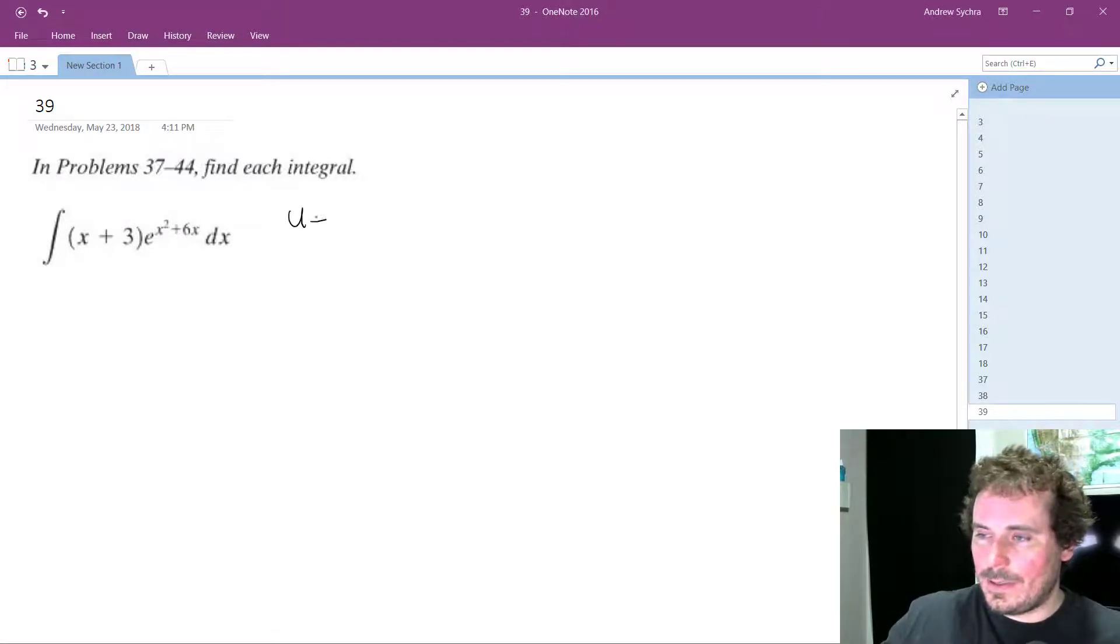We're going to set u equal to x squared plus 6x, and then du is going to be equal to the derivative of that, which is 2x plus 6.